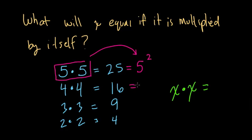And here, with 4 times 4, that's just 4 to the second power. If I take 3 times 3 and get 9, that's just 3 to the second power. And if I take 2 times 2, that's just 2 to the second power.